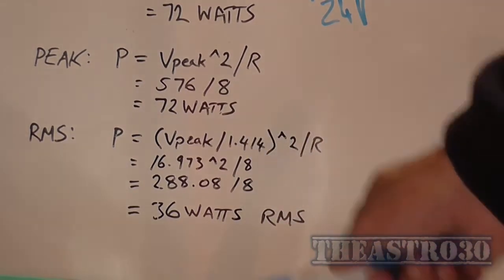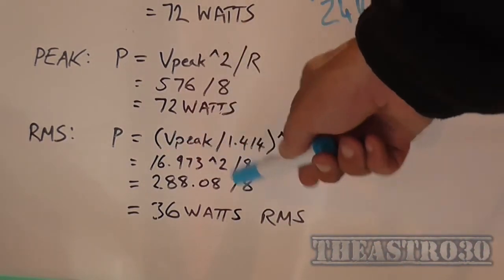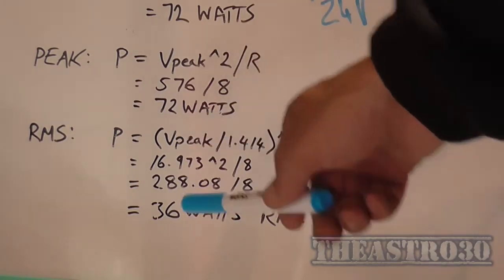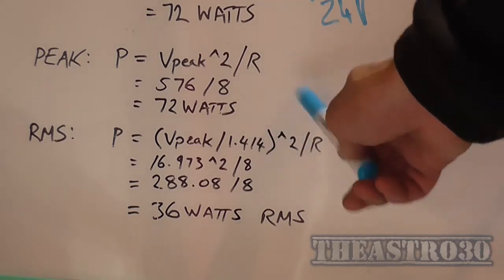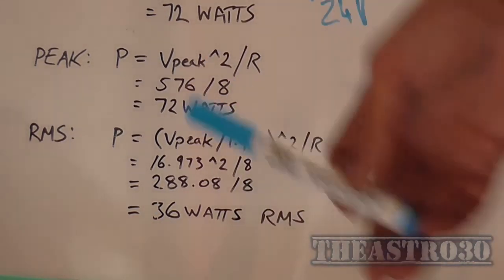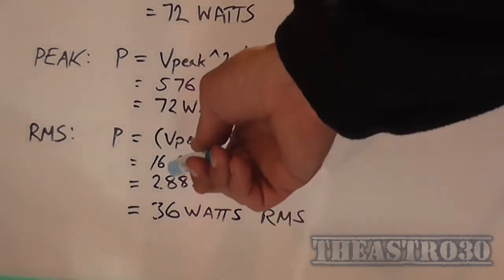So that's this result times this result. So it's multiplying that against itself, and then dividing it by the resistance, as we did in the peak example.